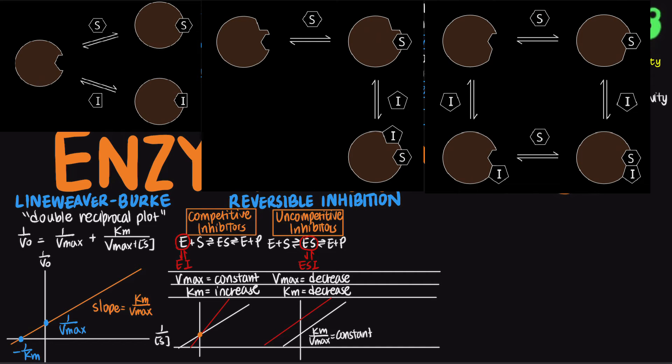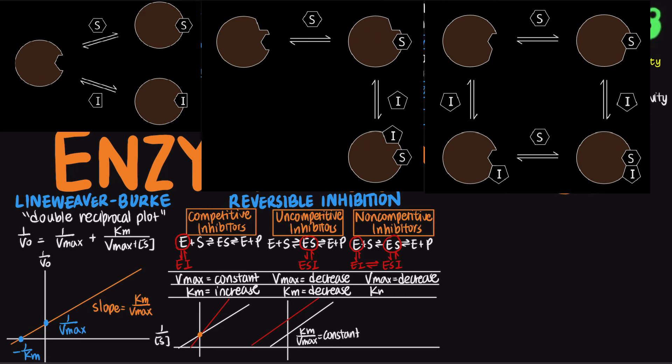A mixed inhibitor can bind to either the free enzyme or the enzyme substrate complex, at a site different from the active site. A non-competitive inhibitor is a special type of mixed inhibitor in which the maximum velocity decreases, while Km remains constant, as shown by the shared Y-intercept.